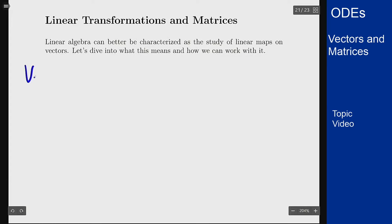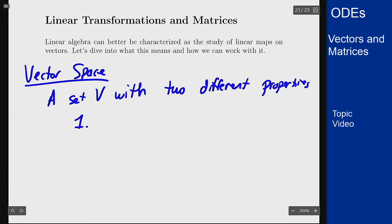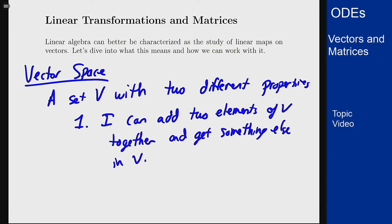What is a vector space? Well, it's basically a set of objects that have the same properties that we had from vectors from real numbers. It's a set V with two different properties: I can add two elements of V together and get something else in V, and I can multiply these things in V by scalars, generally real numbers, and get something else in V.